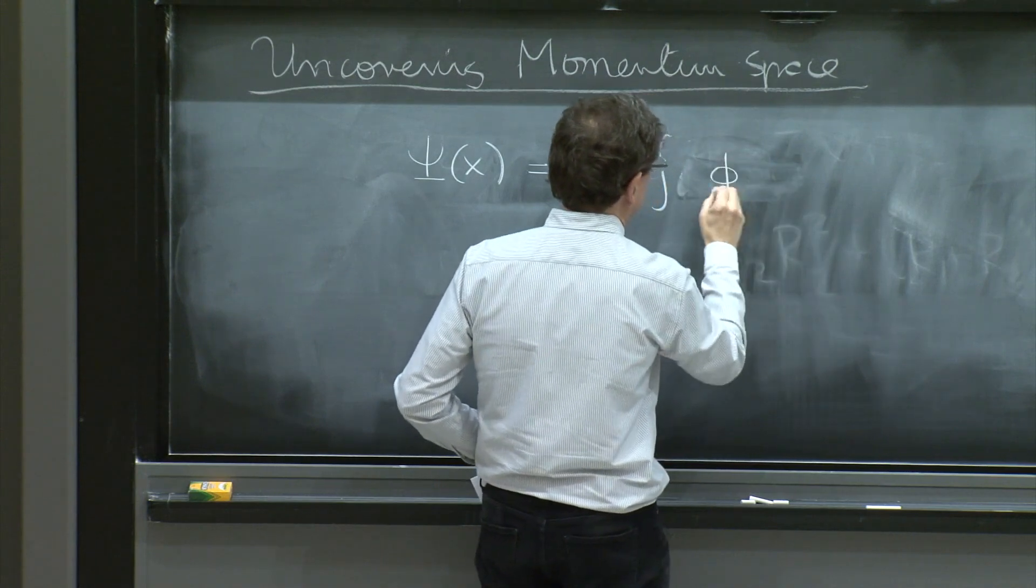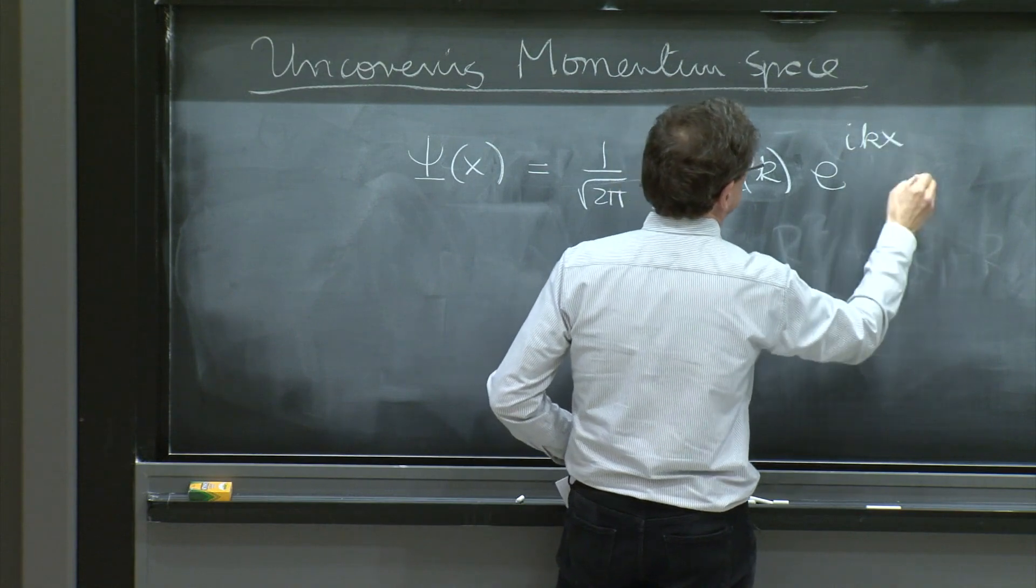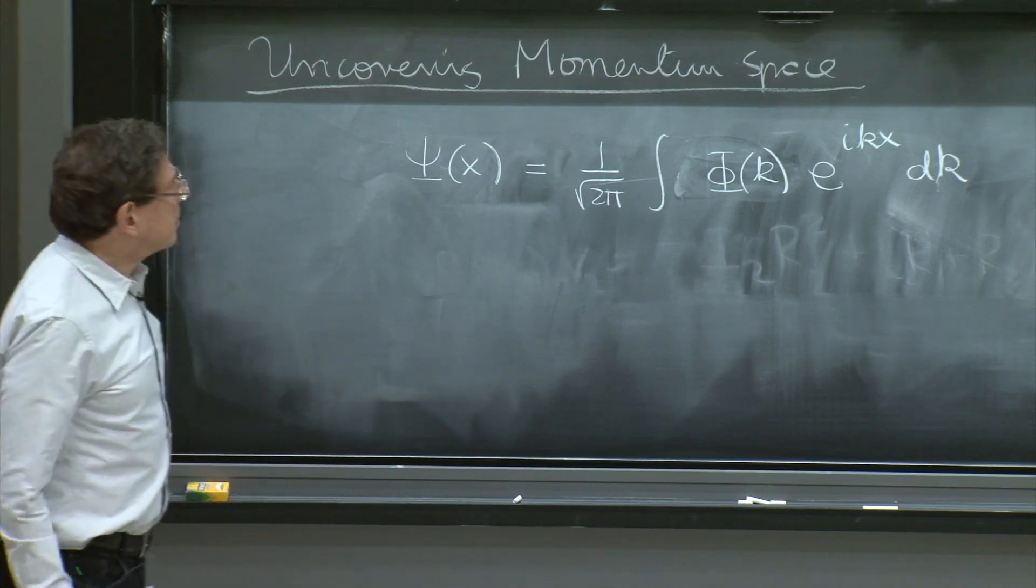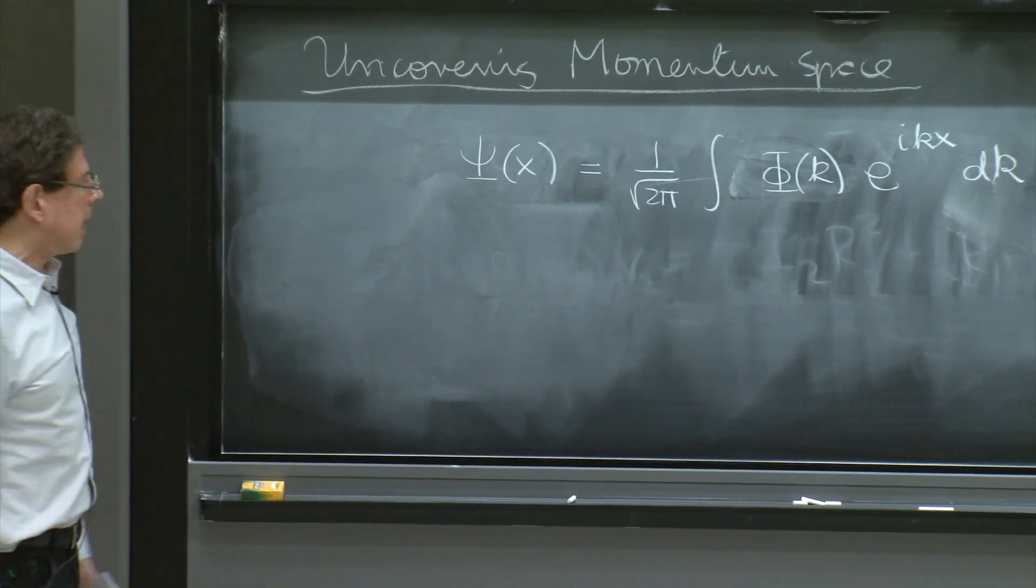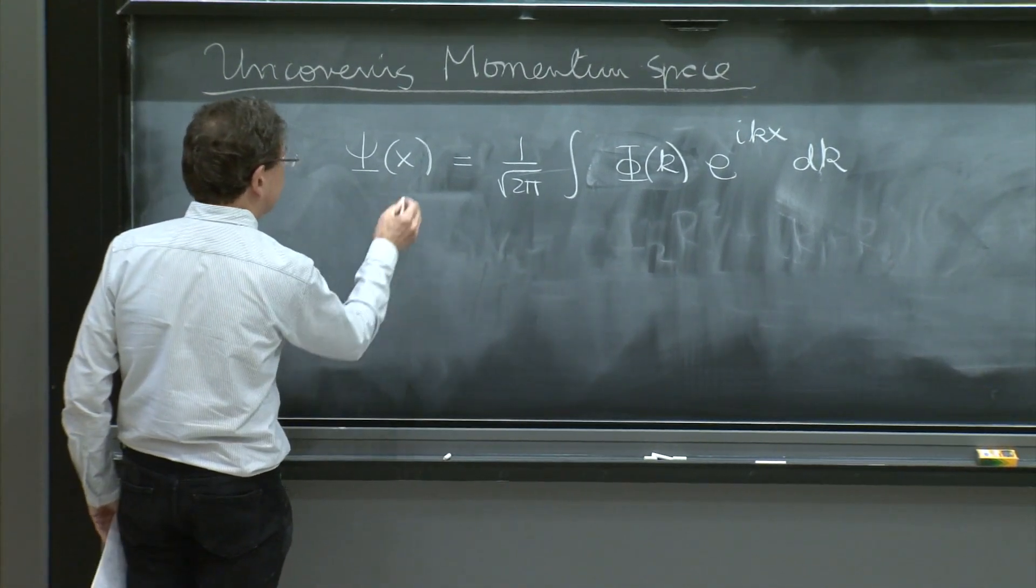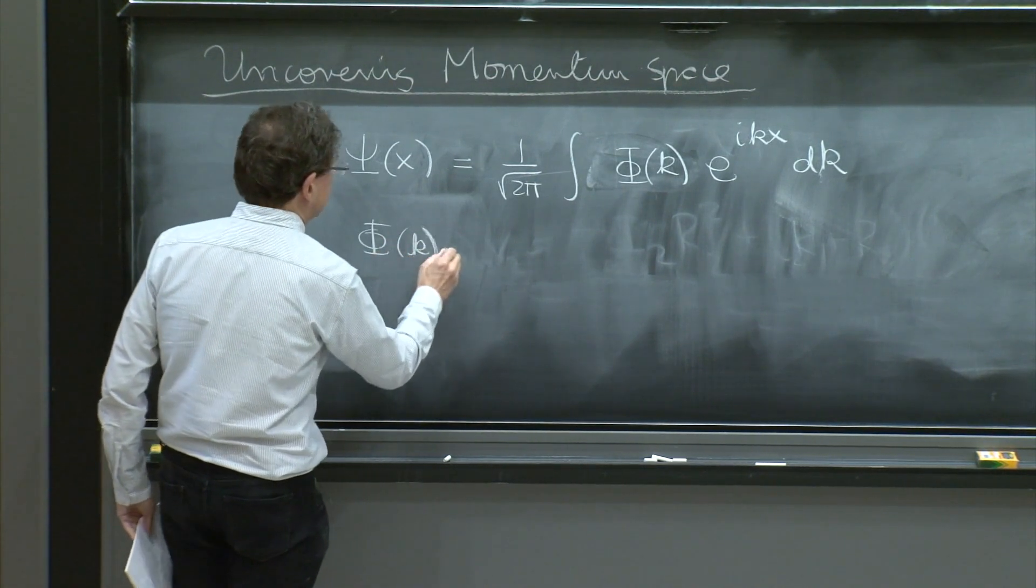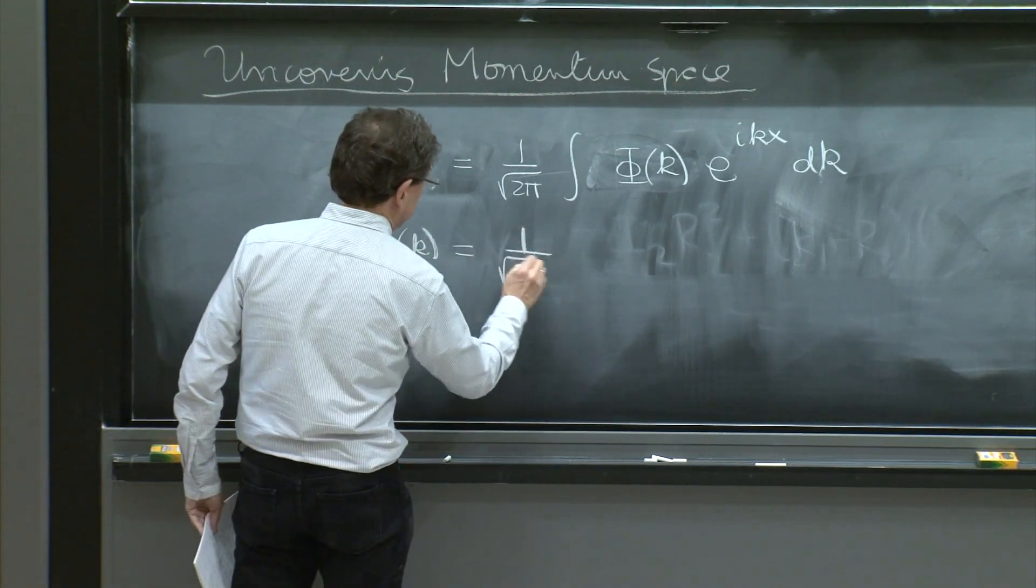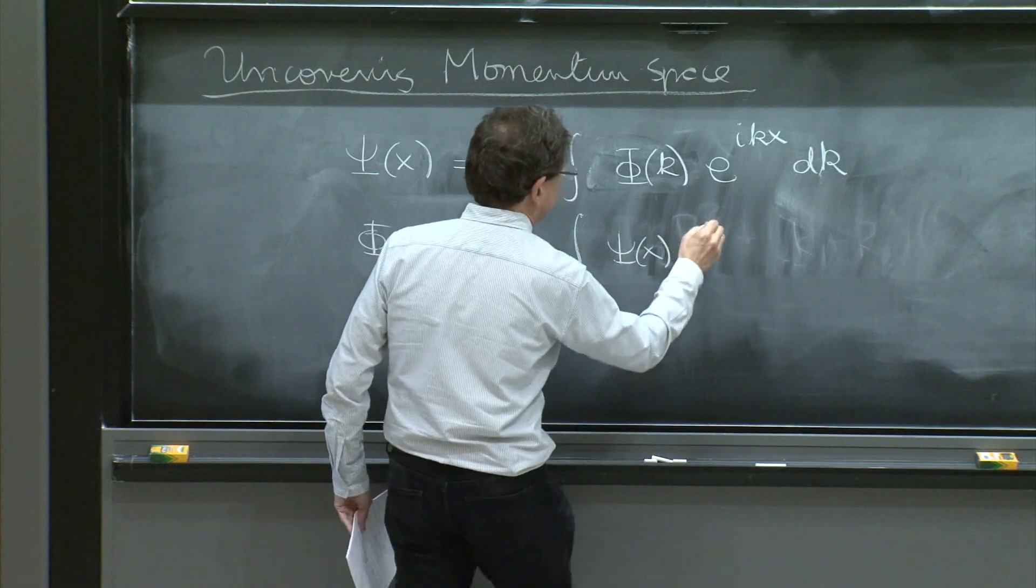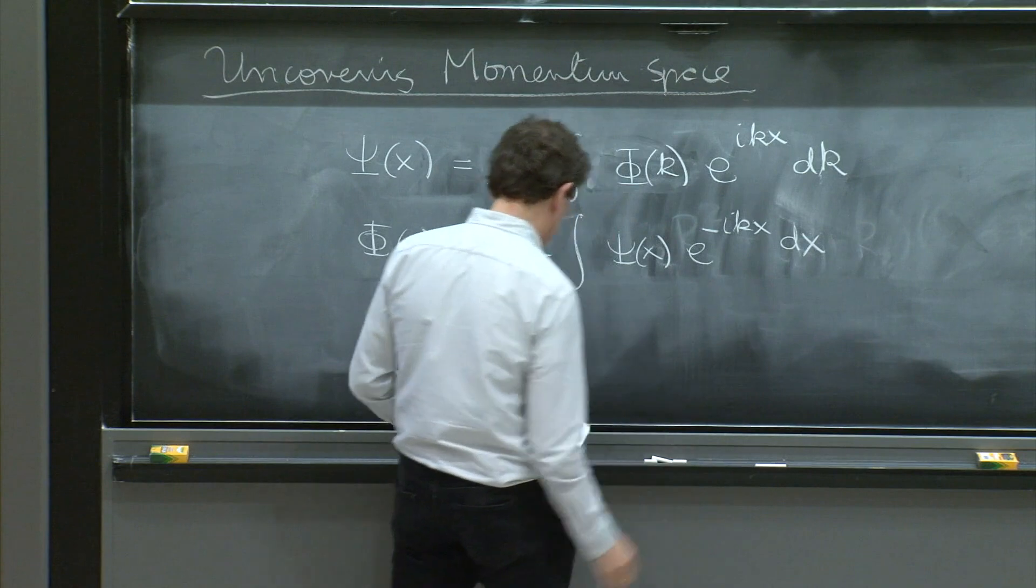You remember these Fourier transform statements that we had, that the wave function ψ(x) is a superposition of plane waves: 1/√(2π) ∫ φ(k) e^(ikx) dk. The other side of Fourier's theorem is that φ(k) can be written by a pretty similar integral, in which you put ψ(x), change the sign in the exponential, and integrate over x.